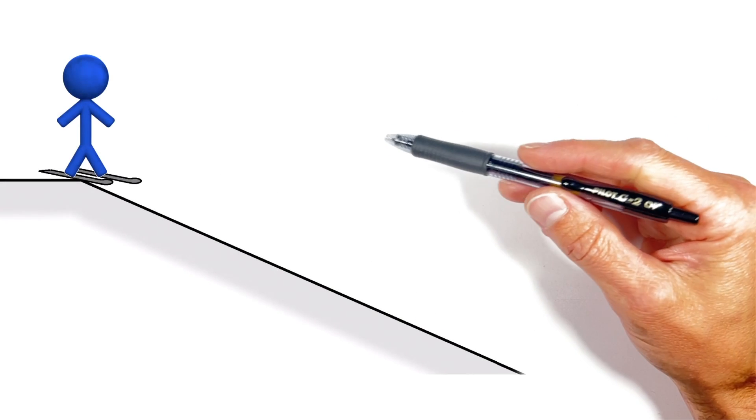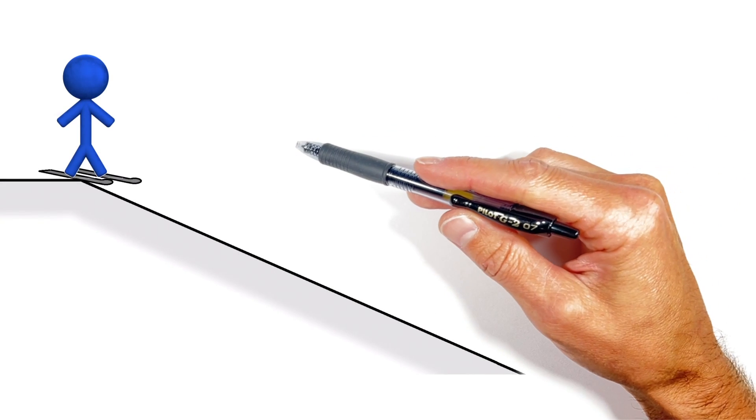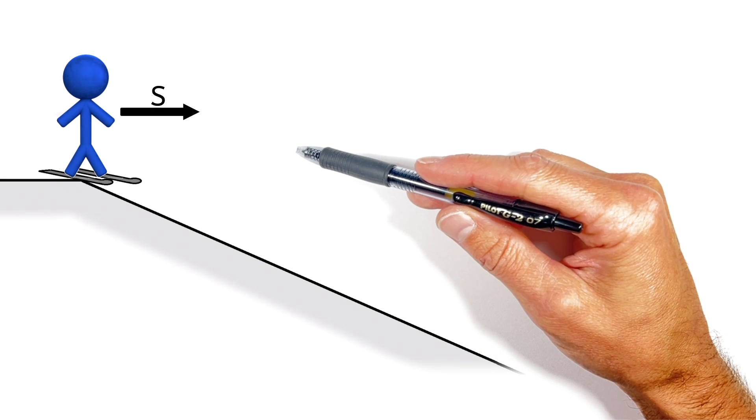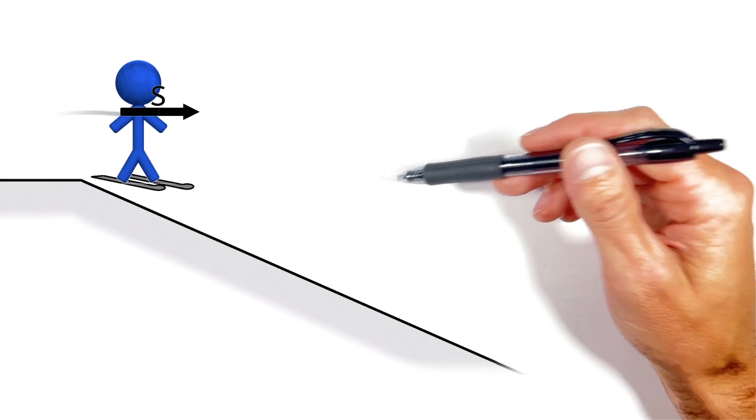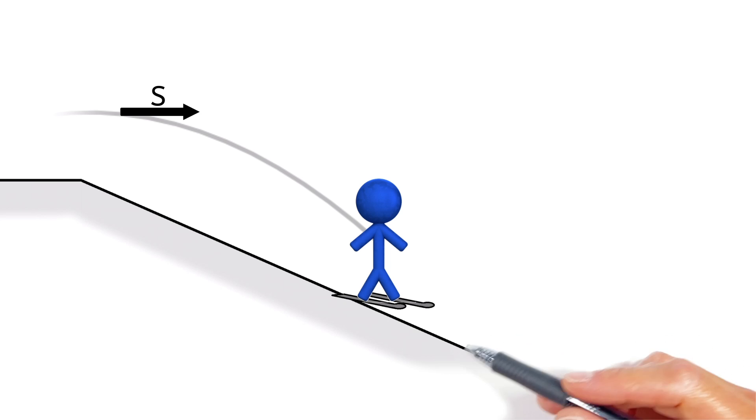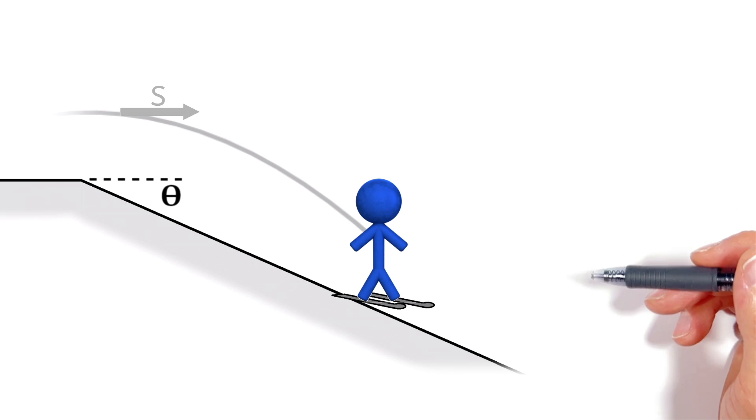So what we have here today is a skier traveling horizontally at some speed we're going to call S. And the skier is going to go off a jump and land on a slope that's angled at some angle theta relative to the horizontal axis.